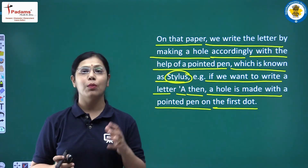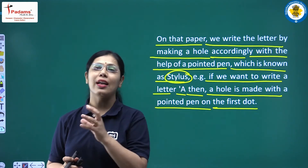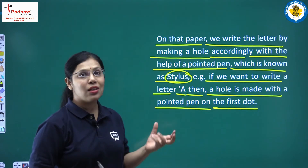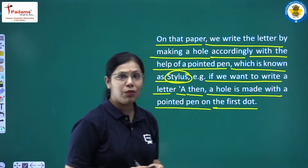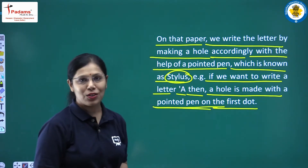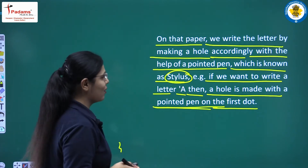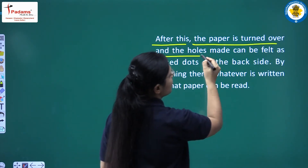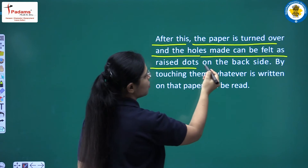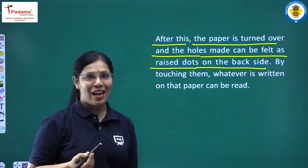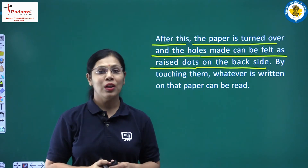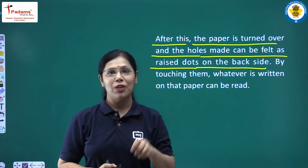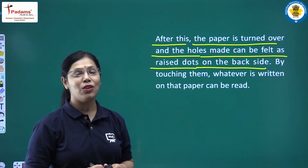In the previous part you have seen the Braille script calendar and how different letters are written in Braille script. So if the letter A is to be written, a hole is made with the pointed pen on the first dot, which is the dot for letter A. After this the paper is turned over and the holes made can be felt as raised dots on the back side — the raised dots made by the stylus can be felt on the other side.